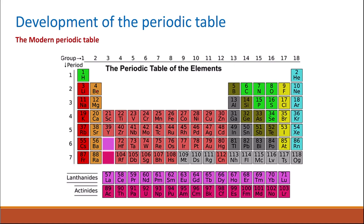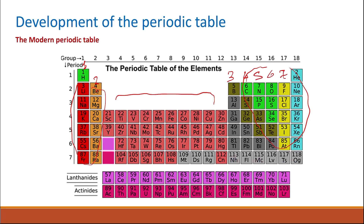In the modern periodic table, the elements on the left are metals, and the non-metals are found on the right. Elements with similar properties are found in the same group. The groups are numbered: Group 1, Group 2 — skipping the transition metals in the middle — then Groups 3, 4, 5, 6, 7, and Group 0.